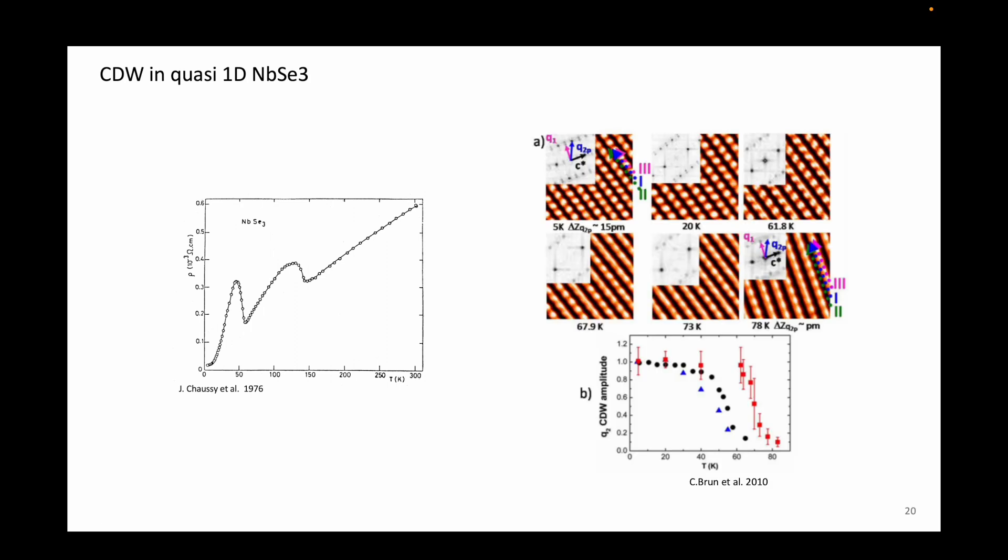On the right are scanning tunneling micrographs of niobium triselenide at several temperatures below and above the second charge density wave transition temperature. As the temperature is lowered, the charge density wave on the surface of niobium triselenide becomes more pronounced.